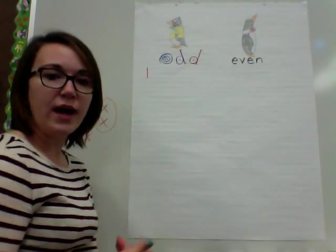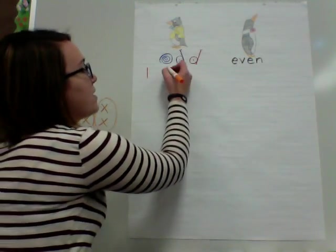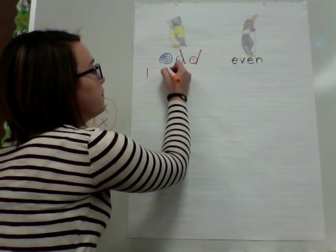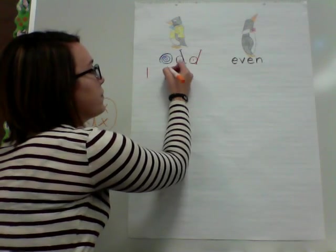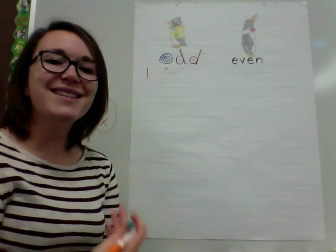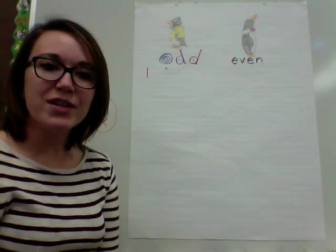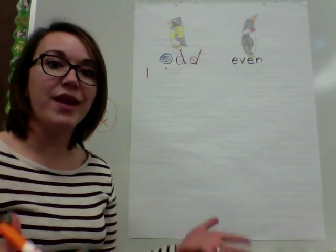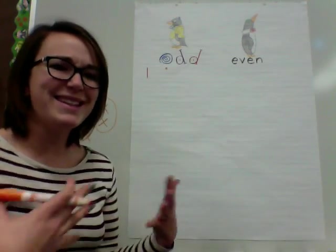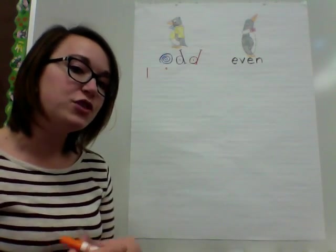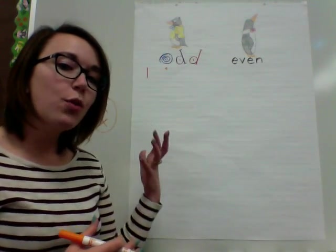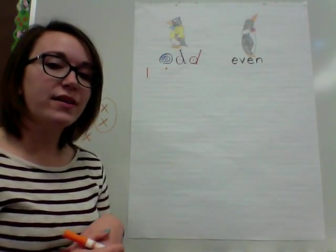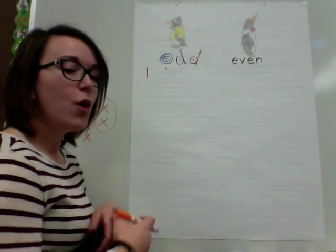So with the number one, I put one dot here. This is an odd number because one person can't partner up with anyone else - they can't split in half and do that. So one, we call an odd number.